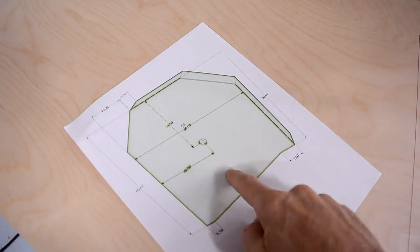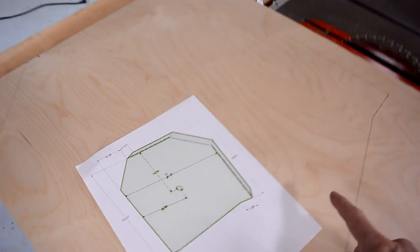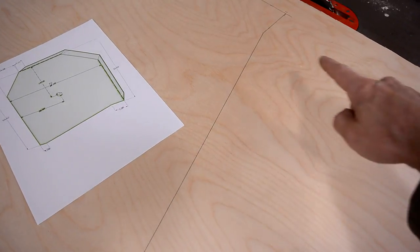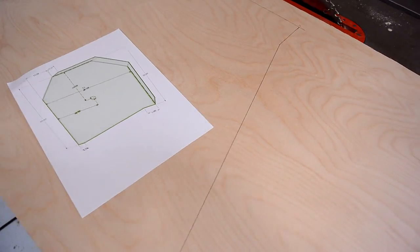Next I'm gonna make the top cover and I've already laid that out on this piece of Baltic Birch plywood and the logical thing would be to cut it straight and then cut the angle but I don't want to waste that much wood.